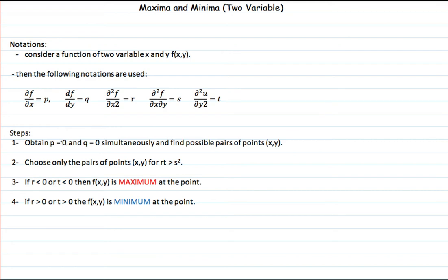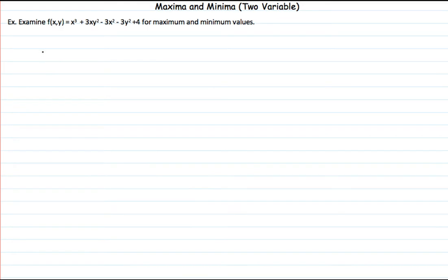We are going to solve them in order to find values of x and y, replace those values into the other equation to get the coordinates of the critical points, and then check if those points obey the relationship: if R times T is greater than S squared. If this condition is satisfied, the next thing is to check for the given point whether R is less than 0 — in which case we have a maximum — or R is greater than 0, in which case we have a minimum. We mostly check with R.